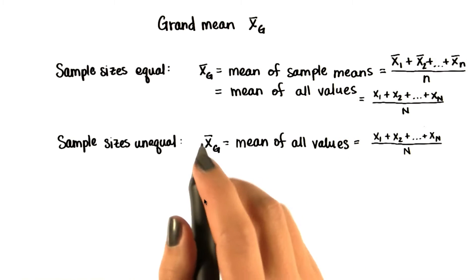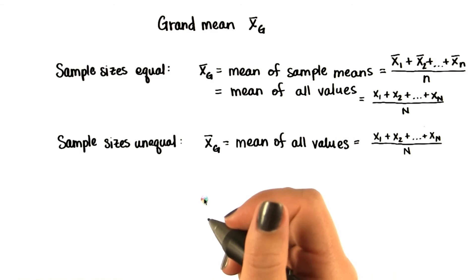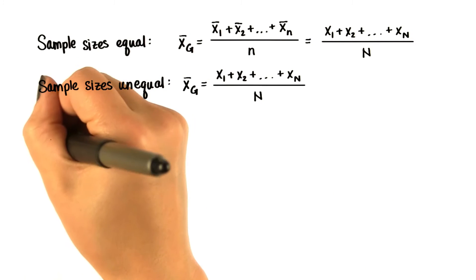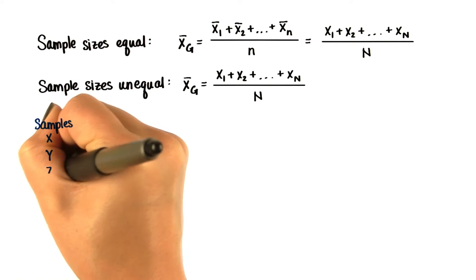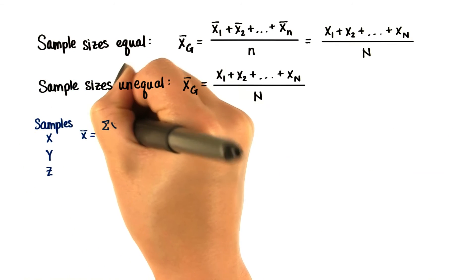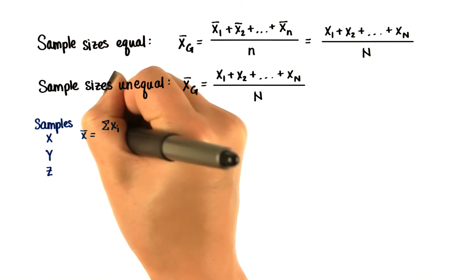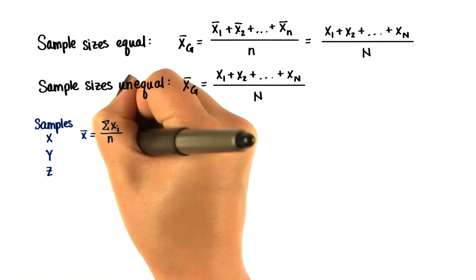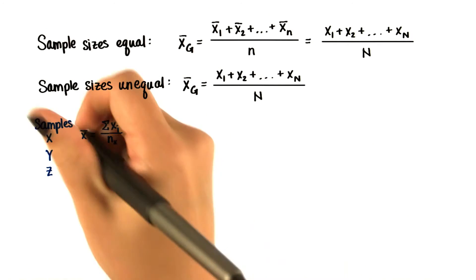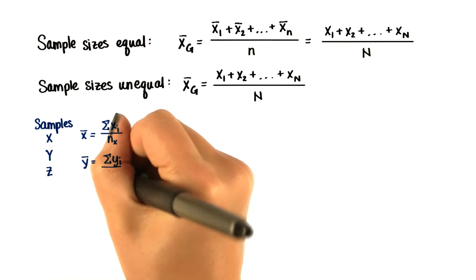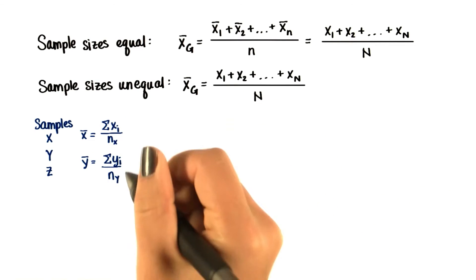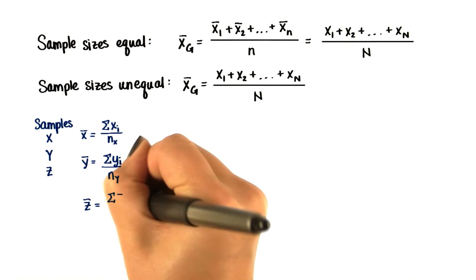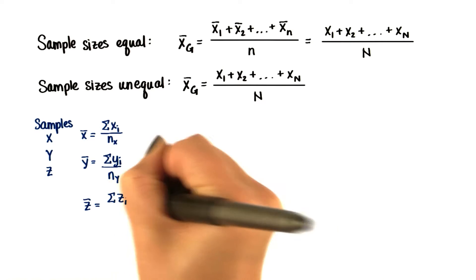Here's a quick explanation in symbols, if you're interested. Let's say we have three samples: x, y, and z. The mean of x is x-bar — the sum of each value divided by the number in that sample. The mean of y is the sum of all the values in y divided by the number in y. And likewise for sample z.